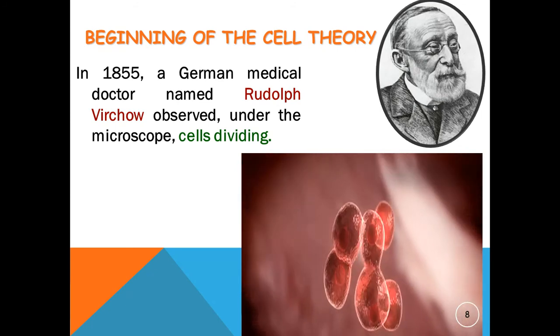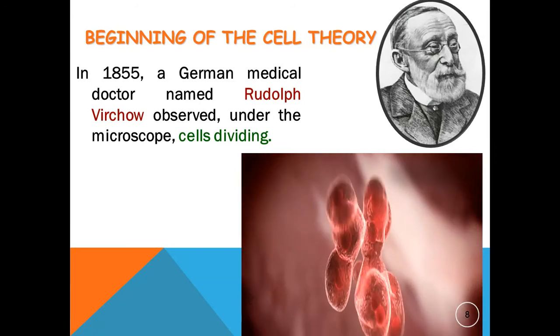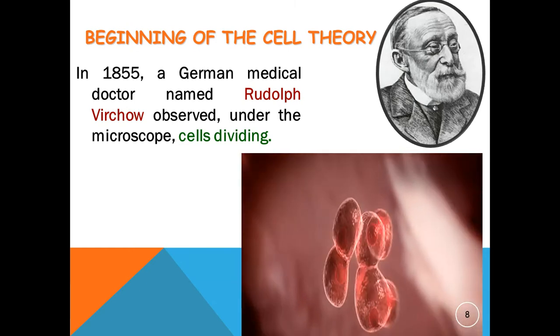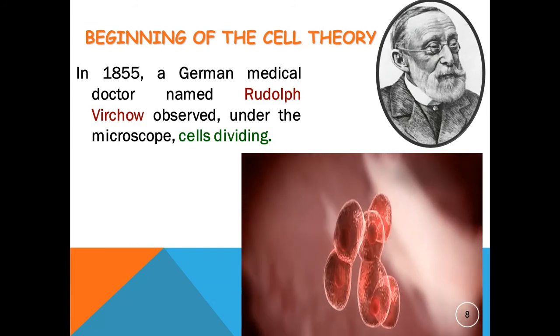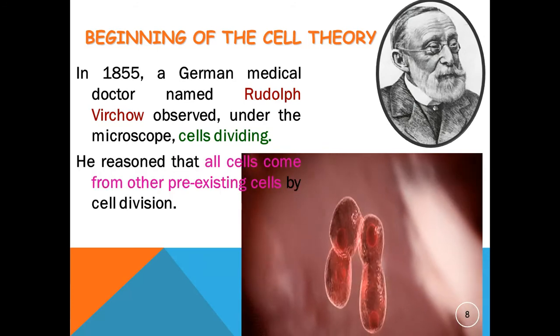In 1855, a German medical doctor named Rudolf Virchow observed under the microscope that cells divide, that is, two cells are formed from the division of one cell.